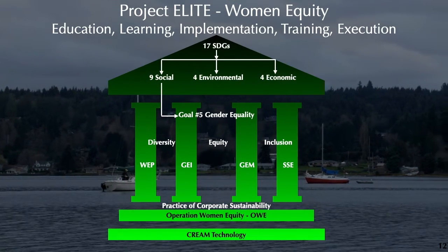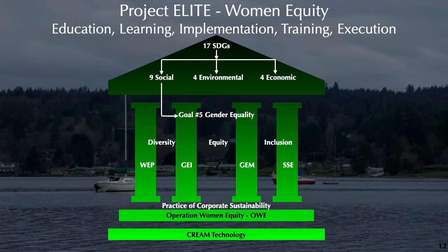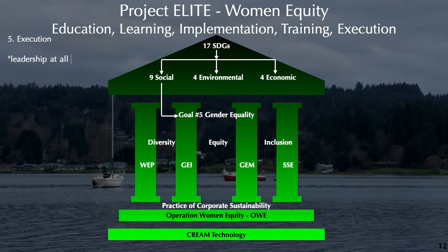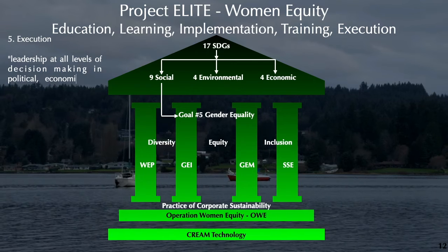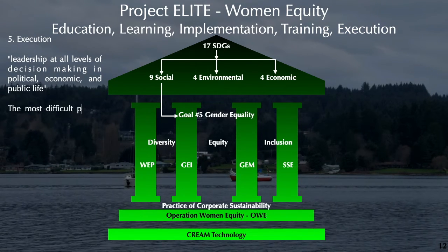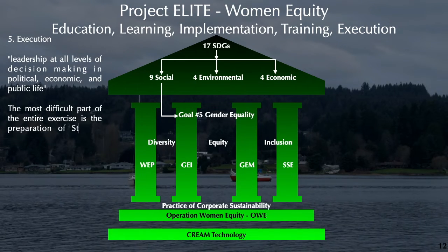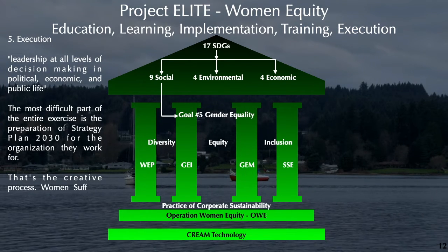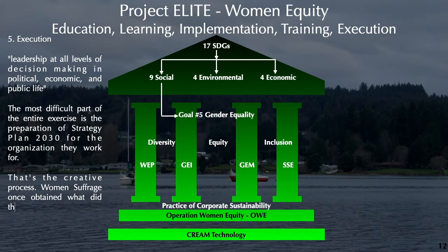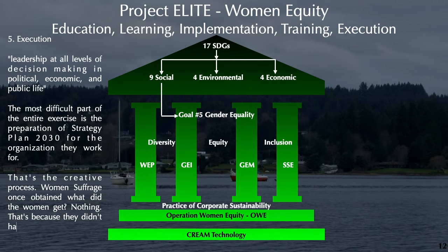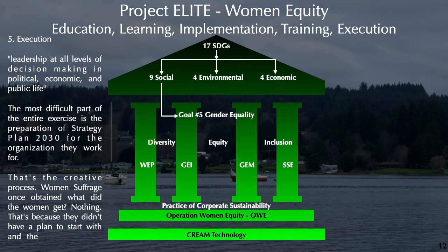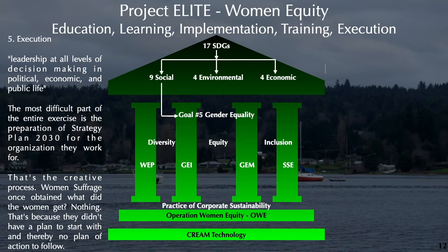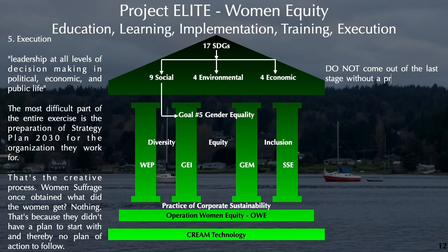Project ELITE Women Equity — Execution: as 5.5 says, gender equality and leadership at all levels of decision making in political, economic, and public life. The most difficult part of the entire exercise is the preparation of Strategy Plan 2030 for the organization they work for — that is the creative process. Women's suffrage: what did the women get? Nothing — because they didn't have a plan to start with, and thereby no plan of action to follow. Do not leave the last stage without a proper Strategy Plan 2030 for women equity.